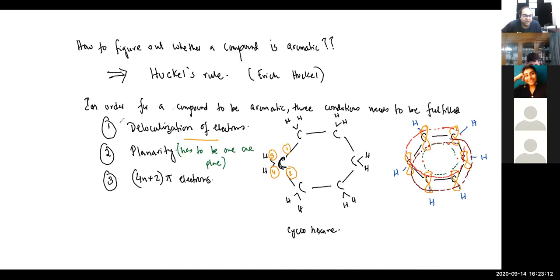So the delocalization of electron is present, planarity is present, and 4n plus 2 pi electrons. So 6 carbon atoms is giving you how many pi electrons? Each carbon atom is donating 1 electron. 6 carbon atoms is donating how many electrons? It's donating 6, which is 4 into 1 plus 2, which is 6 pi electrons. So it also fulfills the third criteria. Now we can say that benzene is an aromatic compound.